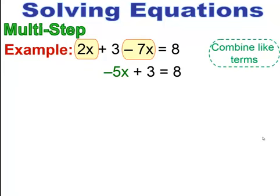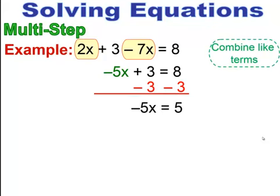Now it's down to a two-step equation. I'm going to get rid of the plus 3 by subtracting it from both sides of the equal sign, and I'm left with negative 5x equals 5. Now I'm going to get x by itself — I have multiplication attached, so the inverse is division. I divide both sides by negative 5. Keep in mind, a positive divided by a negative gives you negative 1.